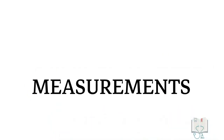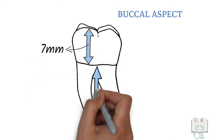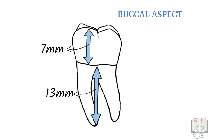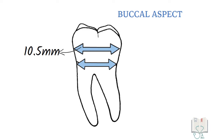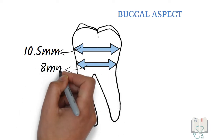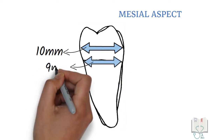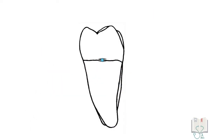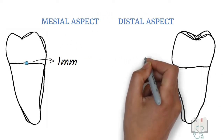Coming to its dimensions, the cervico-occlusal length of the crown is 7 millimeters and the length of both roots is 13 millimeters. The mesiodistal diameter of the crown is 10.5 millimeters and at its cervix it is 8 millimeters. The buccolingual diameter of the crown is 10 millimeters and at its cervix it is 9 millimeters. The curvature of the cervical line on the mesial side is 1 millimeter and on the distal side it is flat.